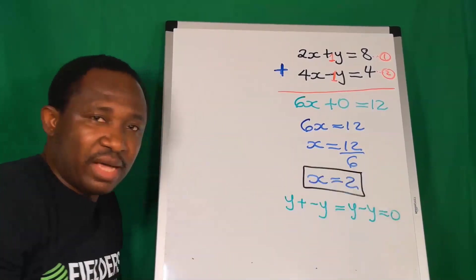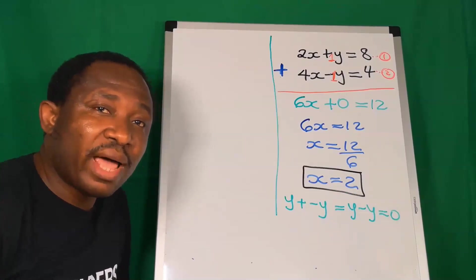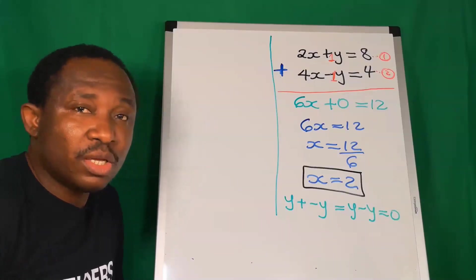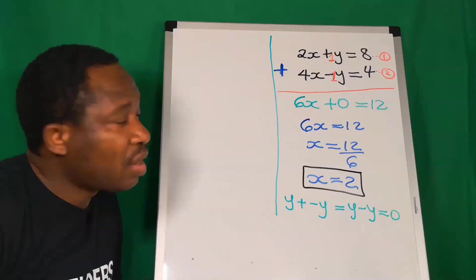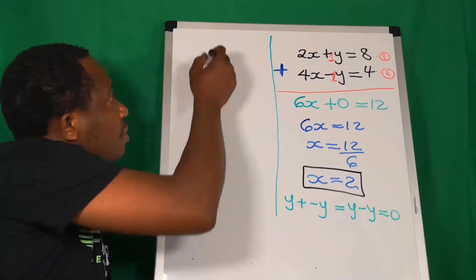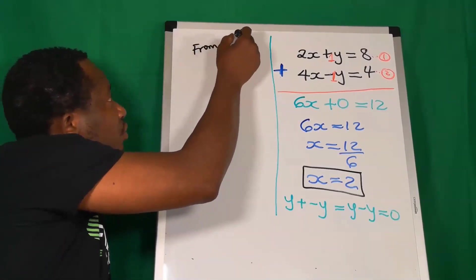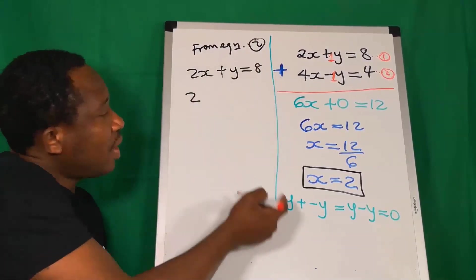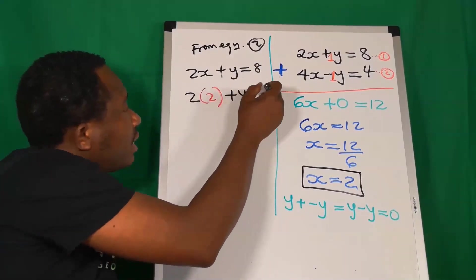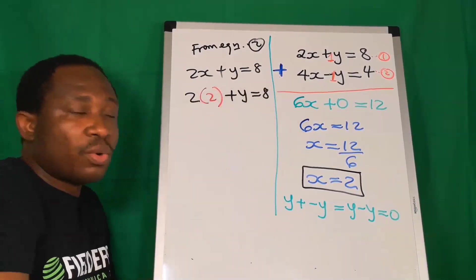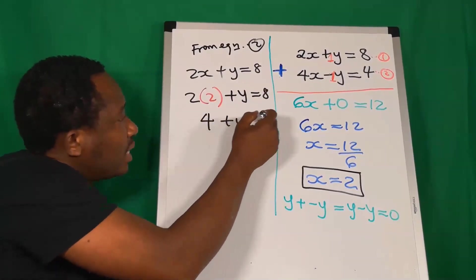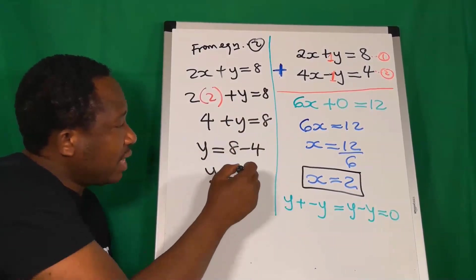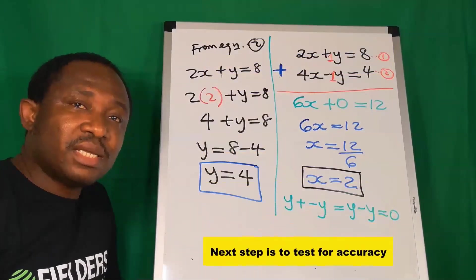Next, to find y, we're going to substitute x = 2 into either equation 1 or equation 2. Let me choose equation 2. We're going to have that 2x + y = 8. Our x is 2, so 2(2) + y = 8. Here we now have 4 + y = 8. Y is 8 minus 4, and you can see that y is now 4. You can see that using elimination method is simple.